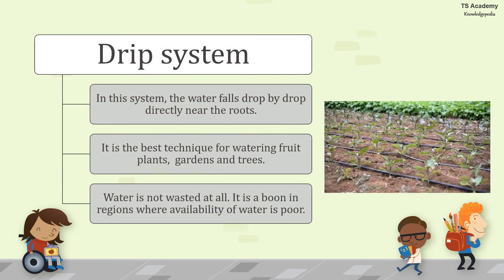The other system is the drip system, generally used in areas where there is a desert or a lack of water. In this system, water falls drop by drop directly near the roots. It is the best technique for watering fruit plants, gardens, and trees. Water is not wasted at all. It is best suited for regions where availability of water is poor.